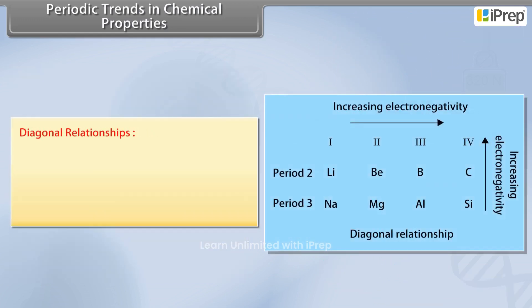Diagonal Relationships. The electronegativity of lithium, beryllium and boron leads to diagonal relationships.